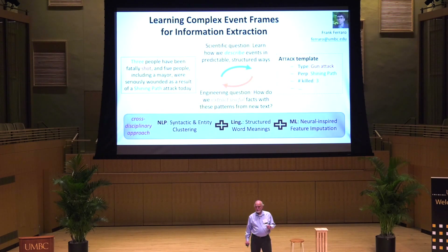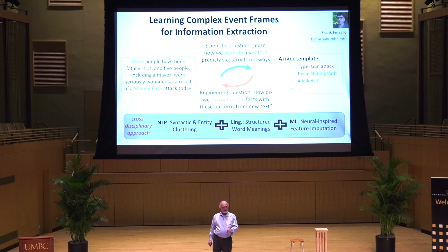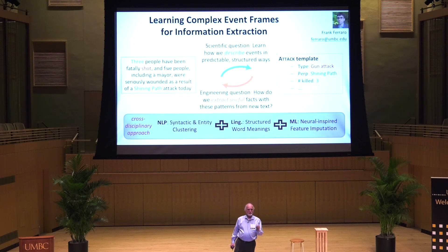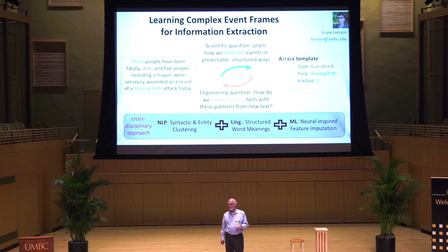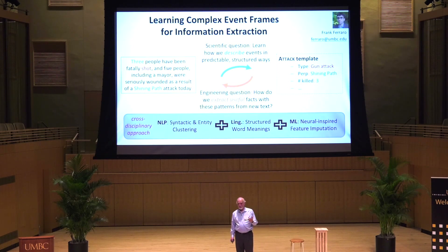Dr. Frank Ferraro is looking at the problem of how you understand events in text. We might have an event template or frame — like an 'attack' template — and having that template makes it easier to interpret text such as 'three people have been fatally shot' and figure out the key elements of what happened. The scientific question is how we learn what these templates are just by analyzing lots of text, say all of Wikipedia. The engineering question is how to use those templates to recognize events or complicated relations in new text — a problem involving both natural language processing and machine learning.